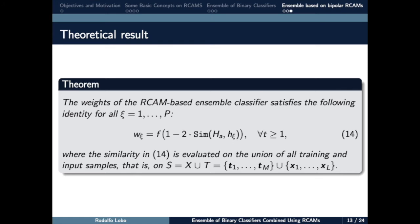Also, in this work, we obtain some theoretical results. The bipolar RCAM base ensemble classifier can be viewed as a weighted majority voting classifier. Furthermore, the weight W_xi depends on the similarity between the xi base classifier H_xi and the ensemble classifier HA.